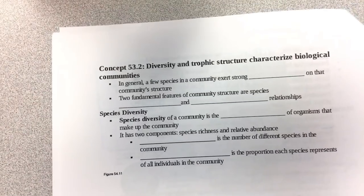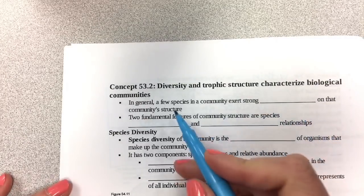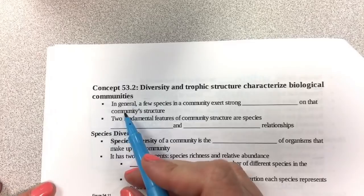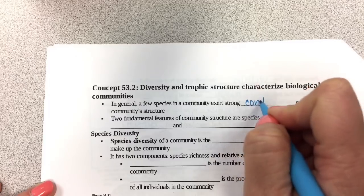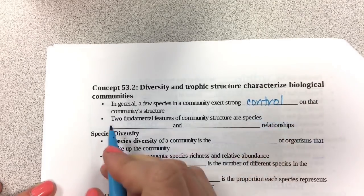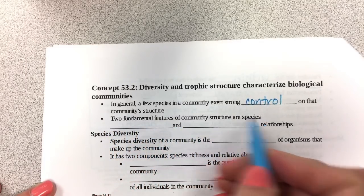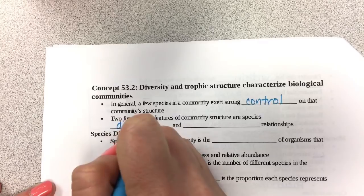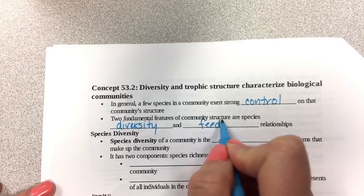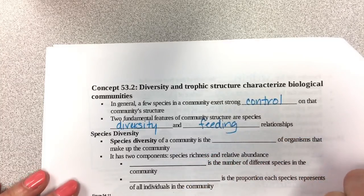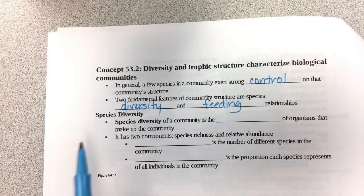This is where we left off in chapter 53, second section. Diversity and trophic structure characterize biological communities. In general, a few species in the community exert strong control on that particular community structure. Two fundamental features of community structure are species diversity and the feeding relationships among organisms in the community. A community is a group of different populations living together in a particular area.